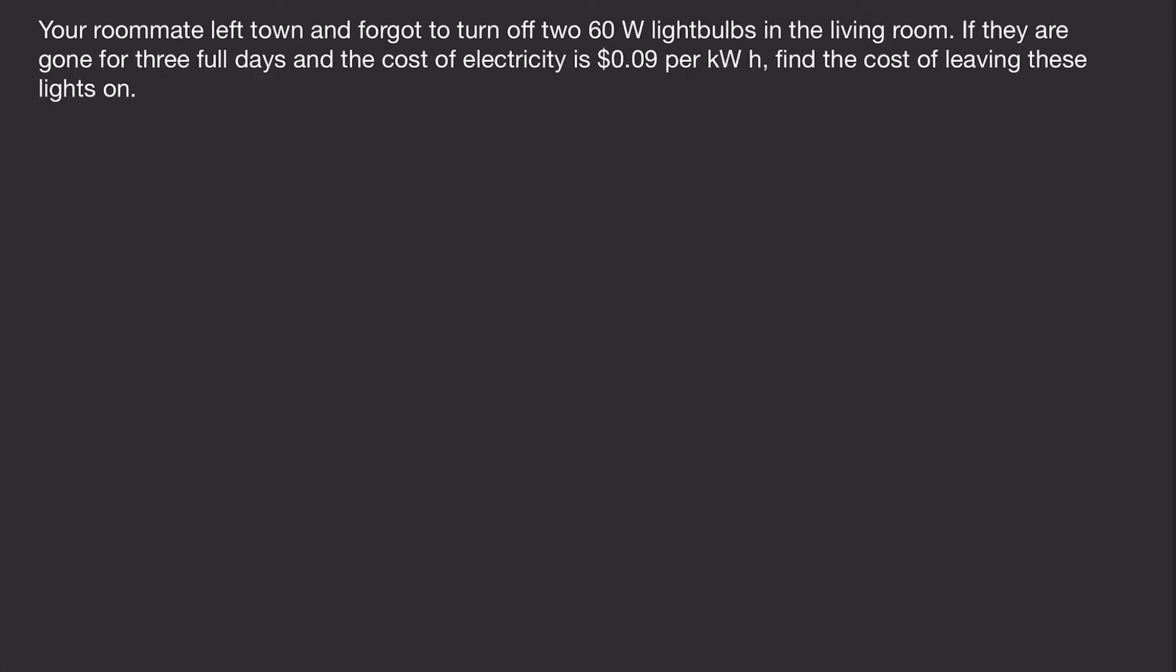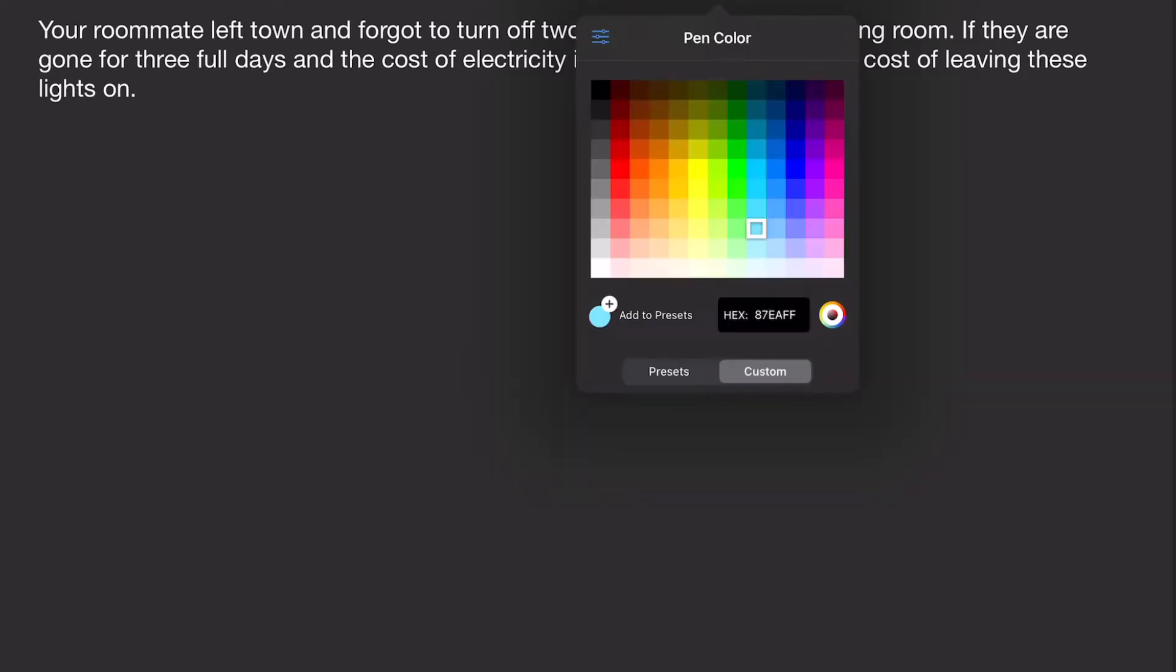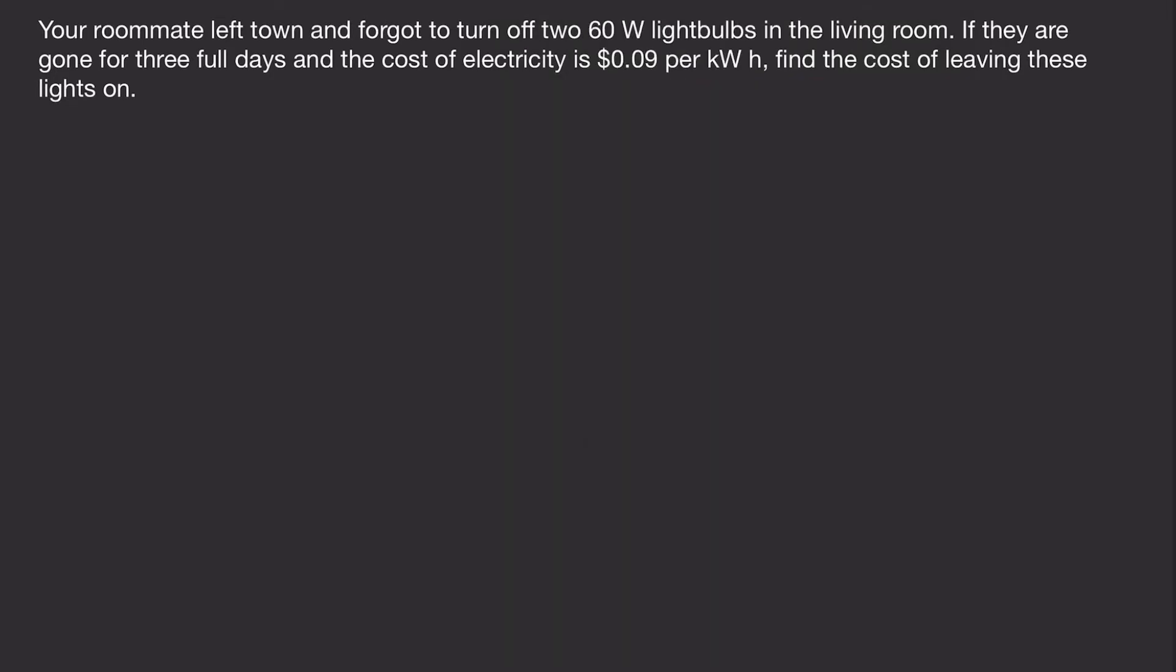The next problem, your roommate has left town and forgot to turn off two 60-watt light bulbs in the living room. If they are gone for three full days, and the cost of electricity is 0.09 dollars per kilowatt hour, or 9 cents per kilowatt hour, find the cost of leaving these lights on. So, first, let's find our power. So we have two 60-watt light bulbs. So that's two times 60 watts, or 120 watts.